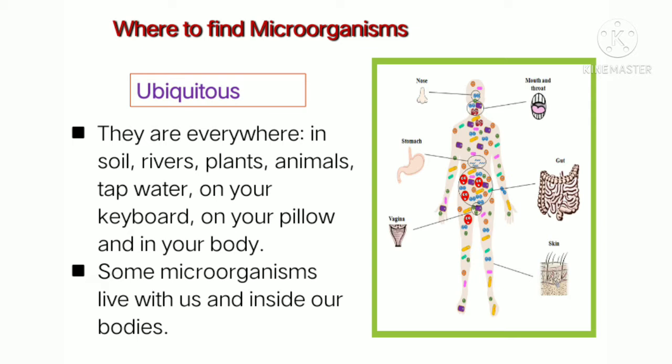Where can we find microorganisms? Microorganisms are ubiquitous — meaning they can be found everywhere. For example, in water, soil, air, on stones, on your keyboard keys, on your pillow, on your bed — they are literally found everywhere. An interesting fact is they can live inside us or on us.